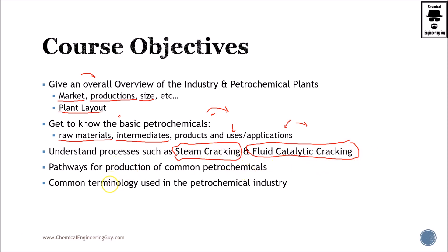I don't want you to only know about these petrochemicals — I want you to know about the production. What do you need to do? Do they use a reactor? Do they use distillation columns? Do they use flashings? And also, this is not that explicit, but you're going to learn a lot of terminology used in the petrochemical industry. Hopefully you get to see all these objectives by the end of the course.